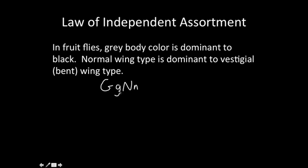When we look at this, if we were going to do a dihybrid cross, there are possible combinations of what this fly can pass on. Big G can go with big N, or big G can go with little N. Little G can go with big N, or little G can go with little N. What we're really doing here is the Law of Independent Assortment.